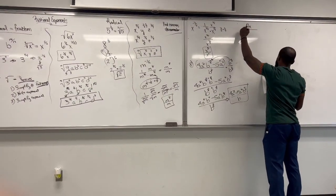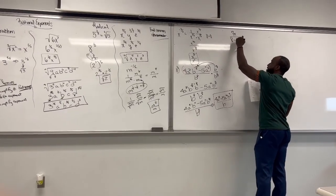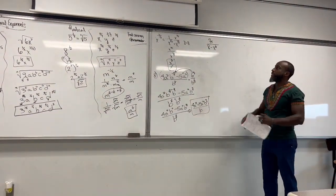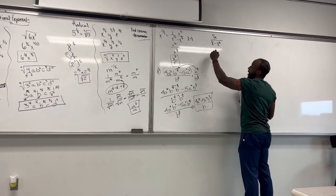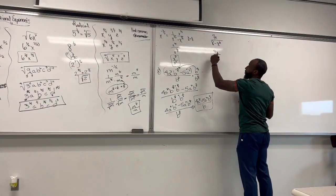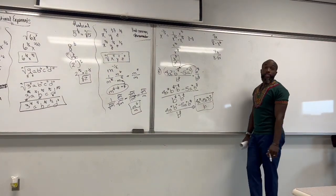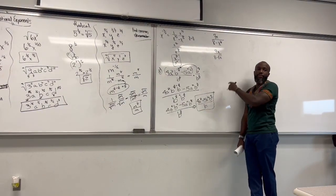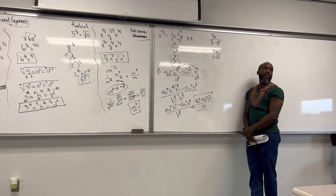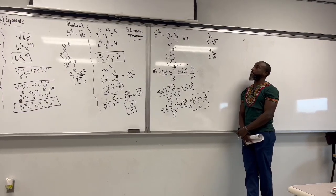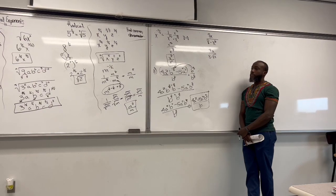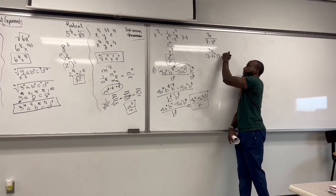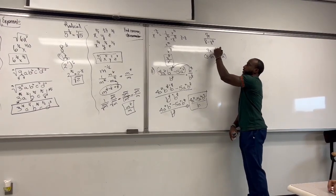So we got 8 minus x to the 1/2 power. x to the 1/2 power is the same as looking at it like this — if we had 8 minus the square root of x. So remember, what do we do if we got this binomial? How do we get rid of the binomial? We multiply by the conjugate — 8 plus the square root of x. It was minus and became plus. You multiply by the conjugate.